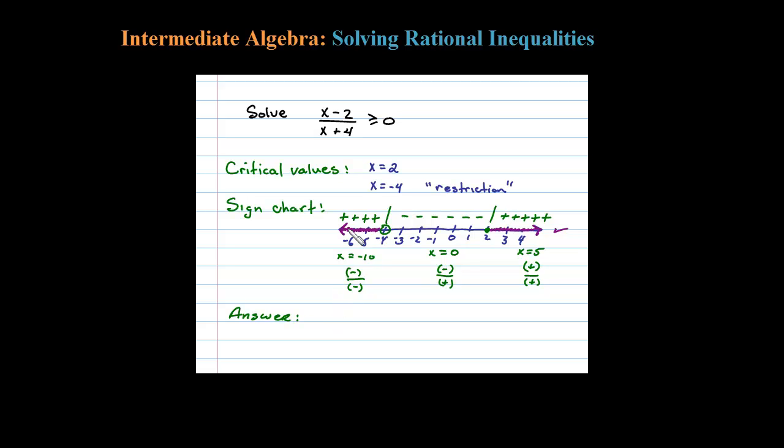What's left is to convert that to interval notation. For this interval, we have negative infinity up to negative 4, non-inclusive, so I'll use a regular parenthesis. Union from 2, inclusive, out to infinity. This is the answer expressed in interval notation: infinitely many x values that I can plug in so that this will be greater than or equal to 0.